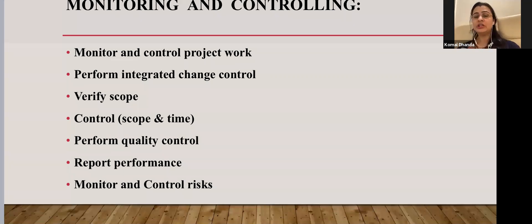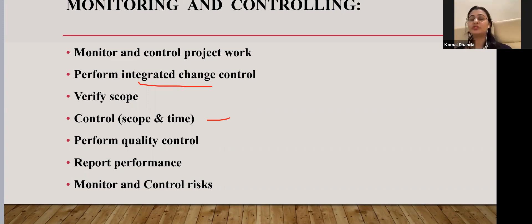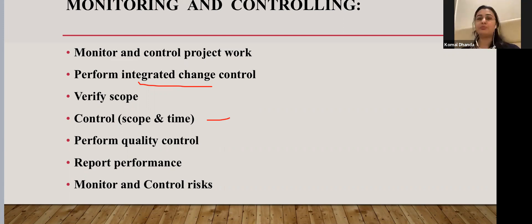Control covers scope, budget, and time. We ensure the scope is appropriate through integrated change control. We verify that we are still on budget and that the project remains on schedule — for example, if a project was supposed to complete in six months, we make sure we will successfully deliver it within those six months and within the assigned budget.